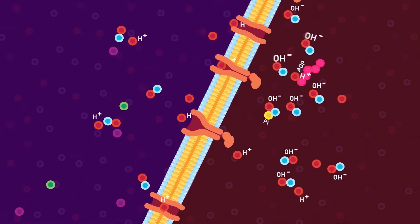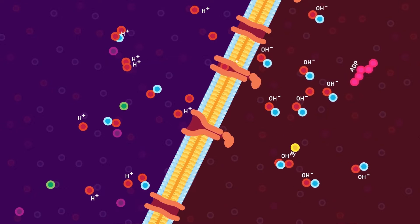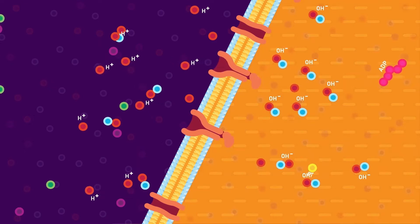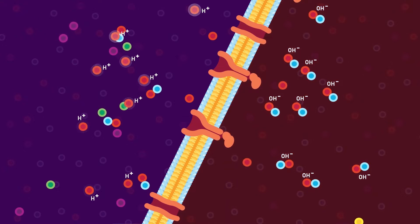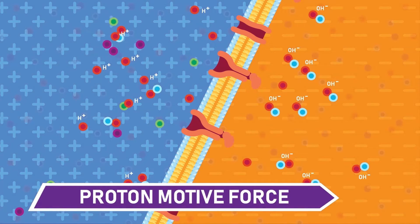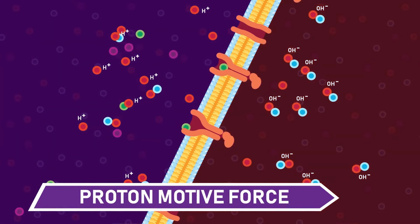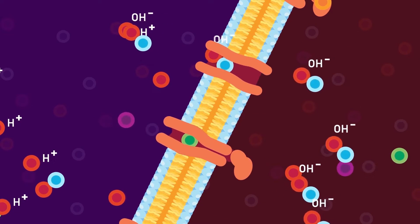The proton pumps in plasma membrane pump out hydrogen ions while hydroxyl ions stay inside the cell, giving inside of the cell a negative charge. The proton concentration increases outside the cell than inside, generating a proton motive force. The electrical and proton gradients established as a result drive cation and anion uptake.